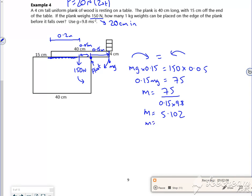So that gives me, according to the calculator, 5.102. So the mass is 5.1 kilos to 2 sig figs. So I can fit 5 one-kilo weights on it before it tips. The sixth one will make it tip. So it says here be careful what the question wants—it wants to know how many weights can be placed on the edge of the plank before it falls over.